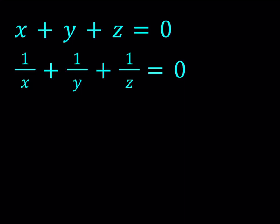Hello everyone, in this video we're going to be solving a system of equations. So we have x plus y plus z is equal to 0 and 1 over x plus 1 over y plus 1 over z is equal to 0. And we're looking for real solutions.